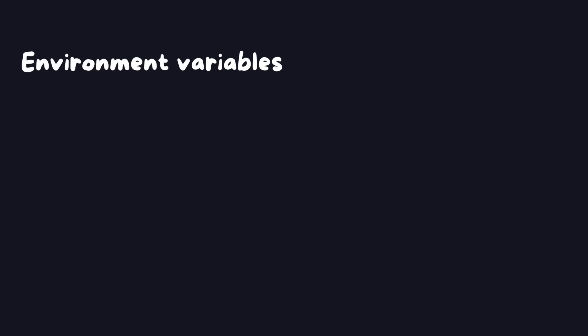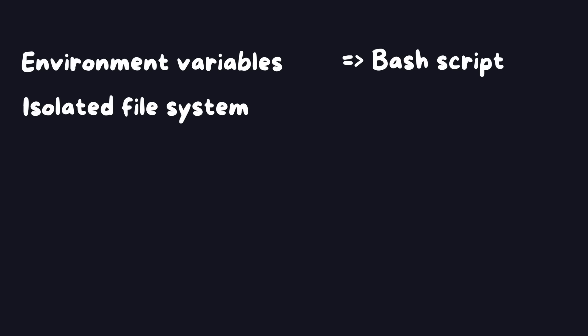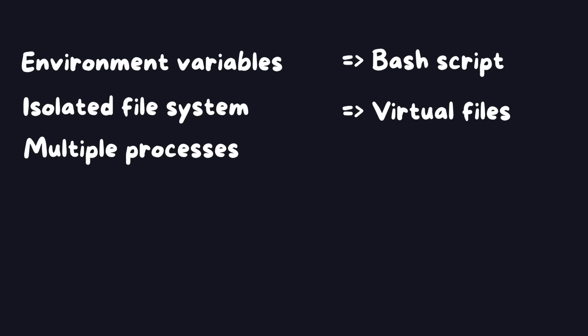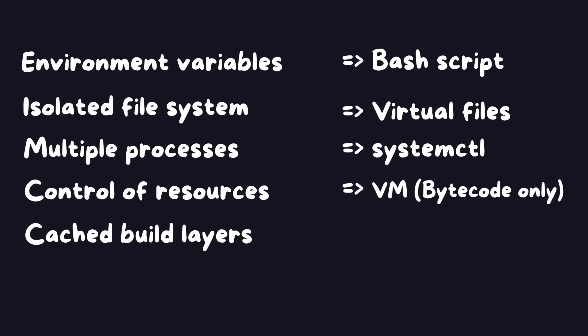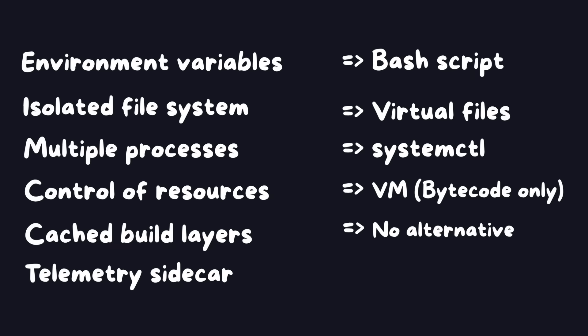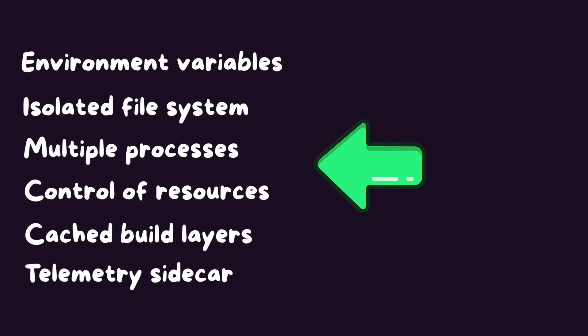So what else do containers give us? You get to set environment variables, which could be done with a simple bash script. An isolated file system, which could be done with virtual files. The ability to orchestrate multiple processes, or systemctl. Fine control over resources — though in bytecode languages you can do that through the VM. Cache layers for builds, which is actually very helpful. And options for telemetry by using sidecars, which you can just do inside your application. None of these advantages are particularly impressive on their own, but together they make containers just that little bit nicer to pass around and deploy — especially if you have many services running at once.